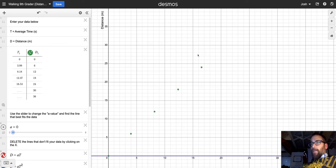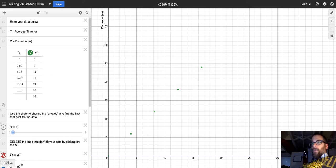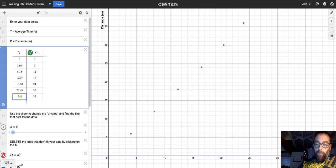All right, so let's get the next couple of data points in there. Back to my spreadsheet. It took 20.45 seconds to get to 30 meters and 24.94 to get to 36. All right, that's all the data.